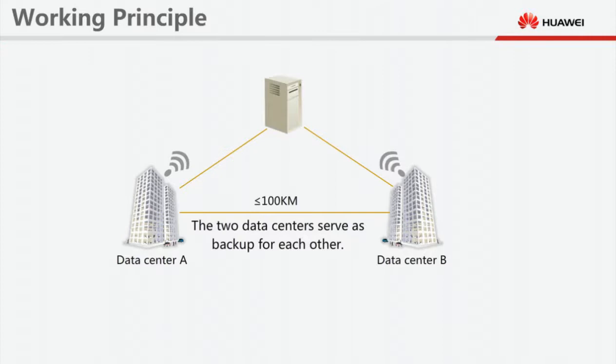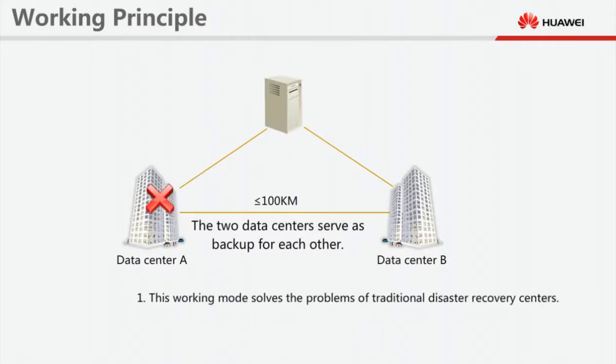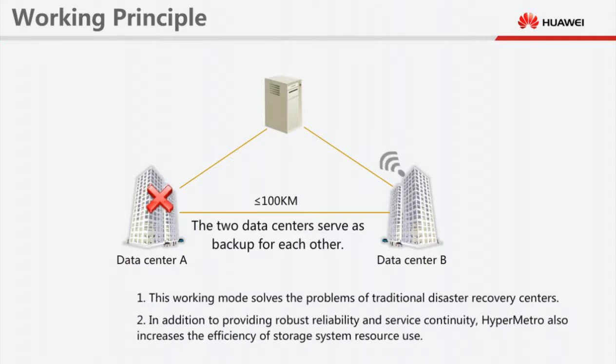If a device in one data center malfunctions or the entire data center breaks down, services are automatically switched to the other data center. This working mode solves the problems of traditional disaster recovery centers. In addition to providing robust reliability and service continuity, HyperMetro also increases the efficiency of storage system resource use.